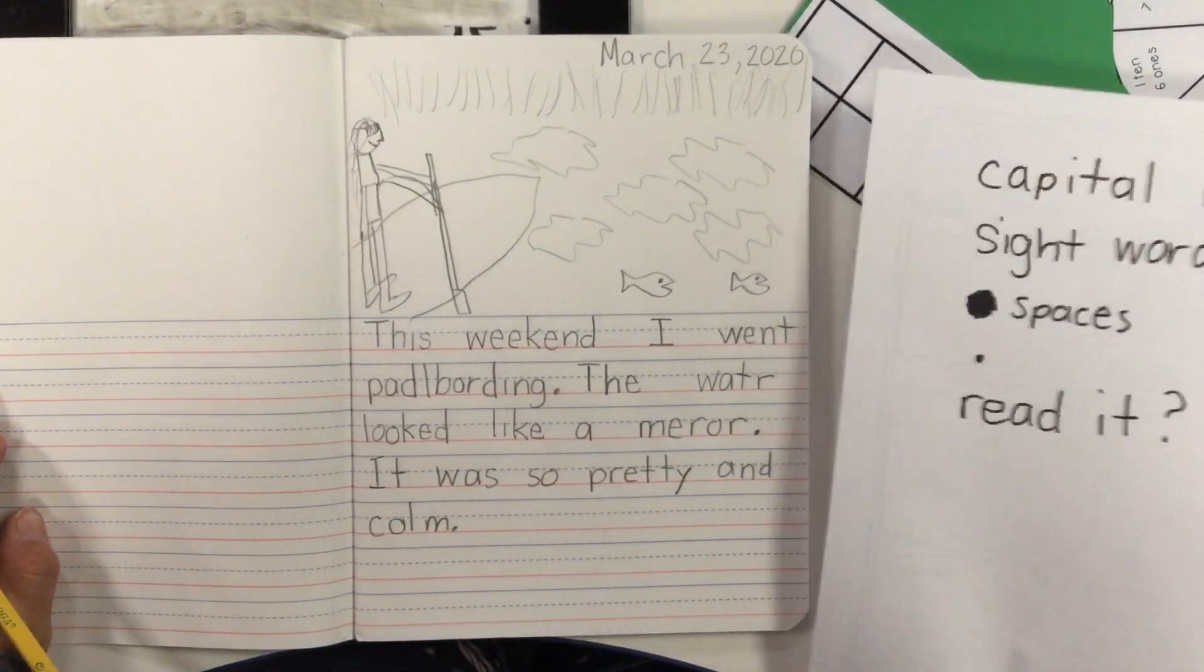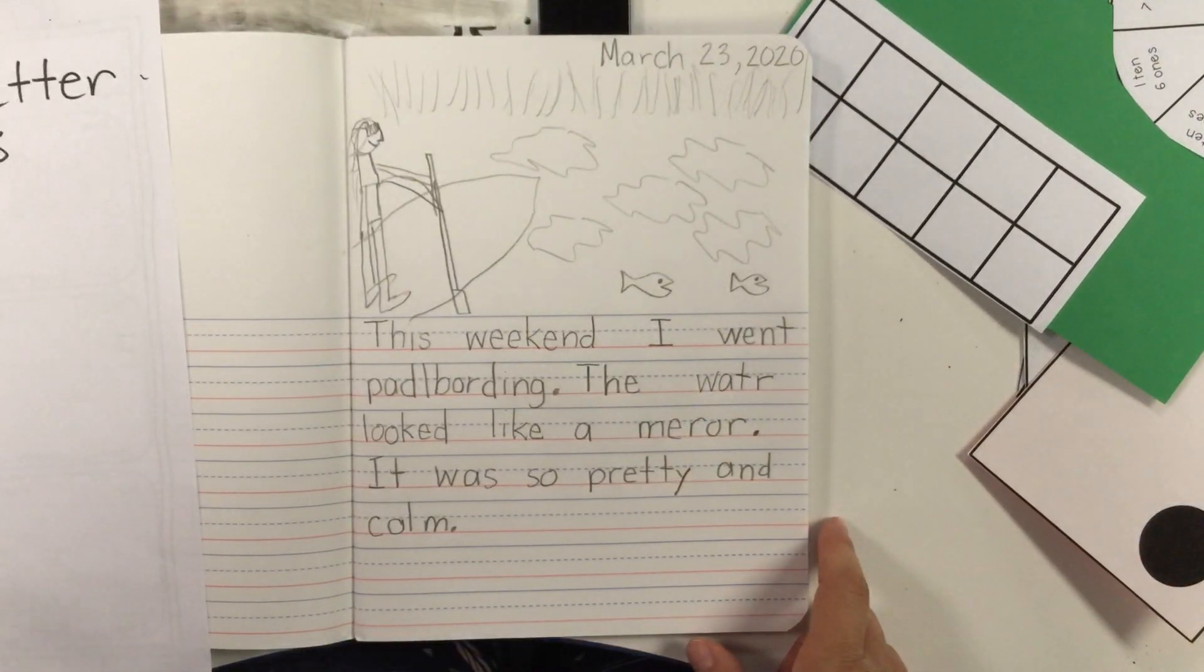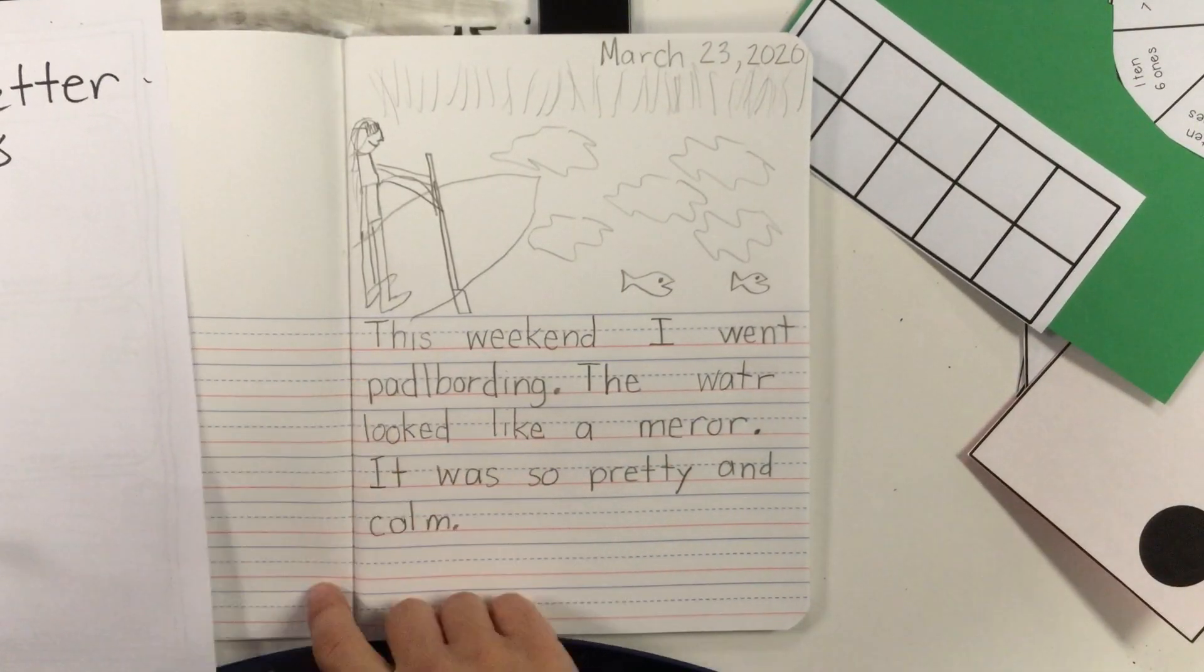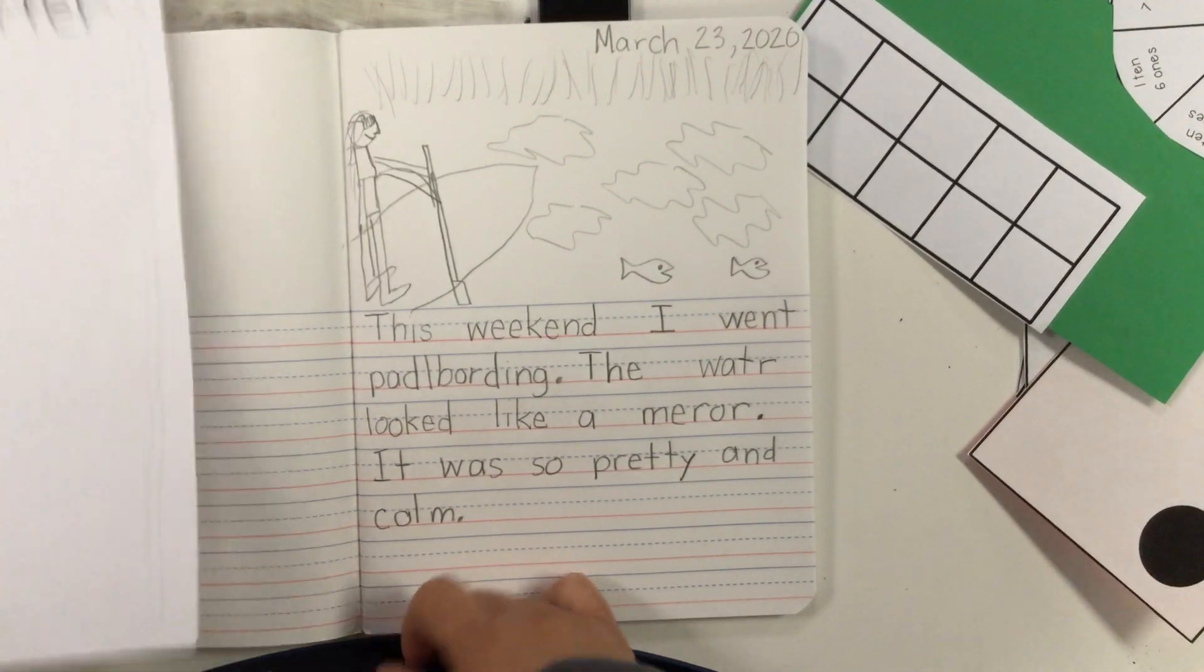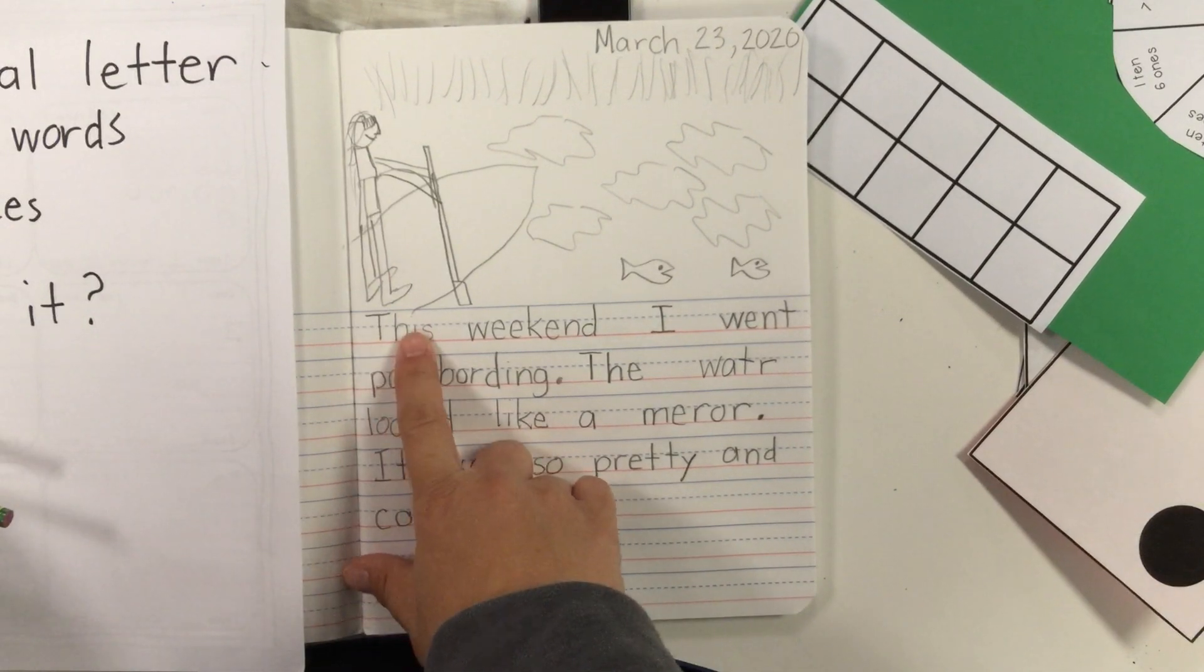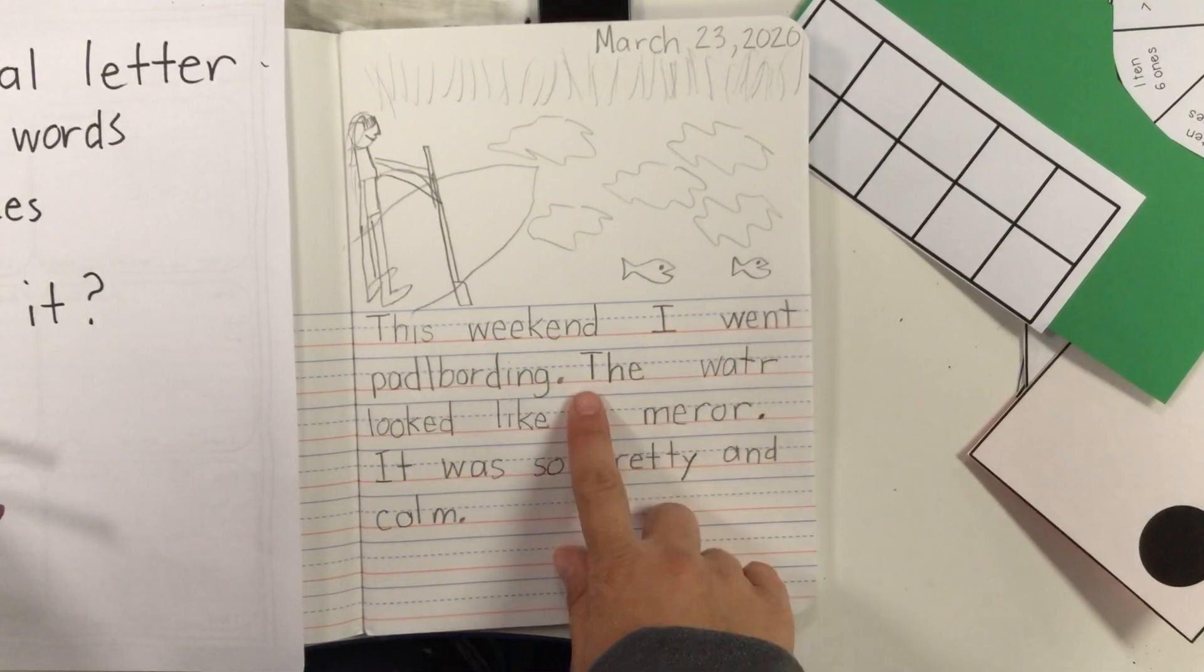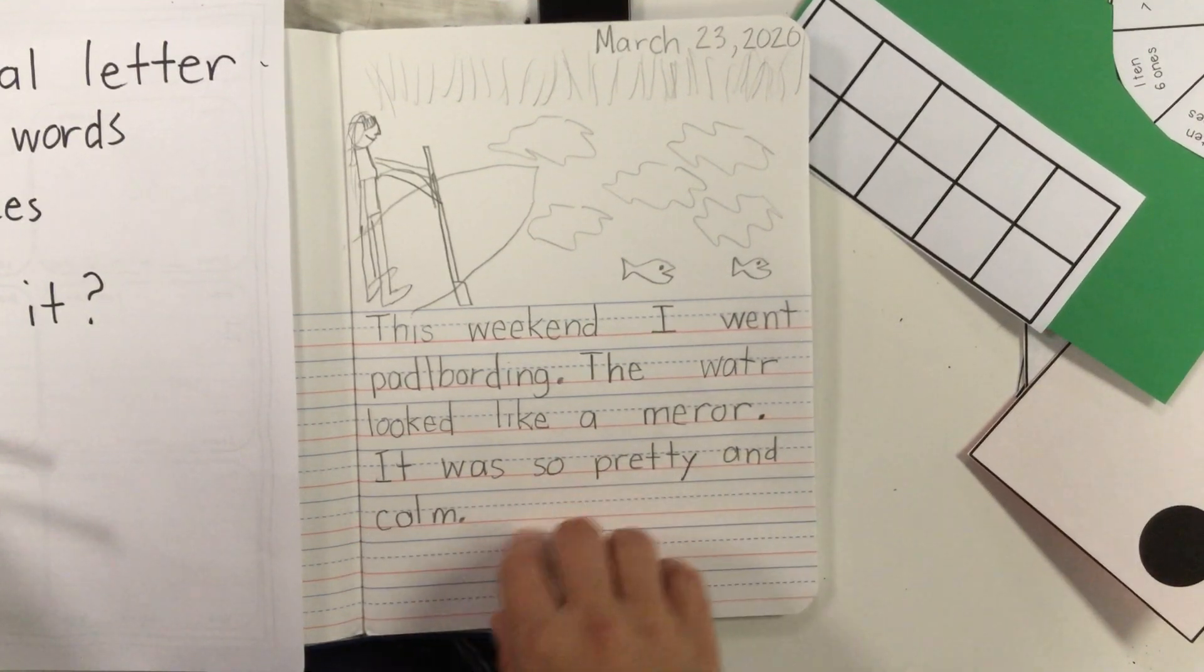So let me see if I have a capital letter starting with all my sentences. This, the, it. Very good. Did I spell all my sight words correctly? I think I did. This, I went, the, like, a, it was so pretty and.